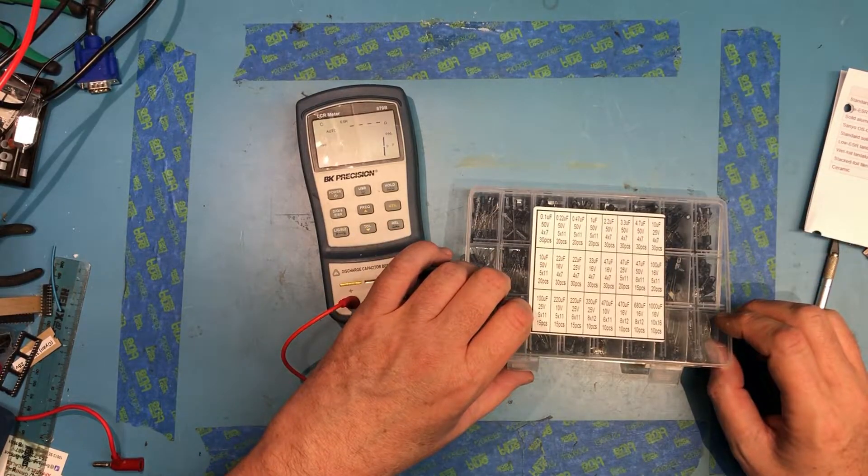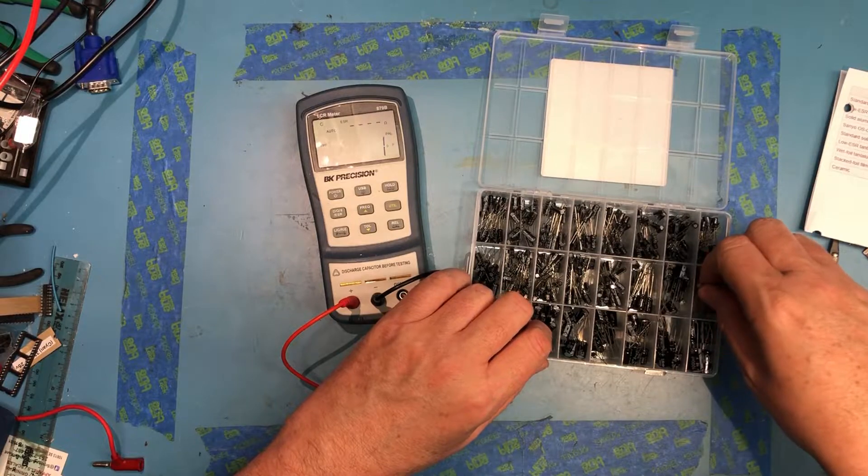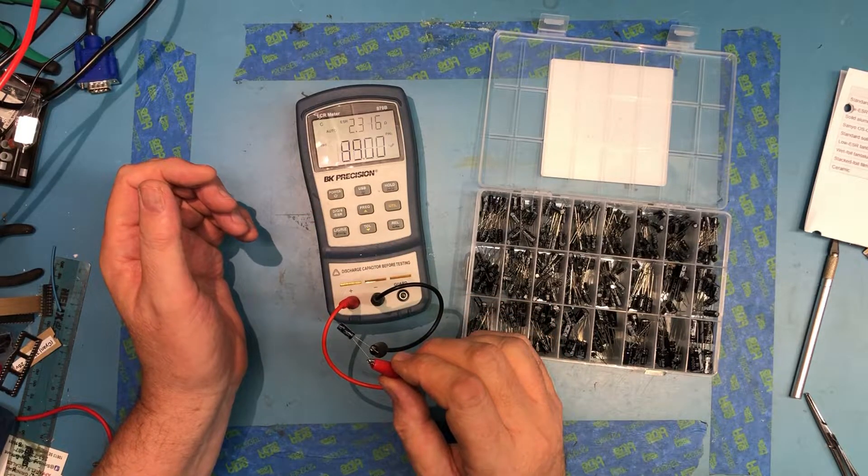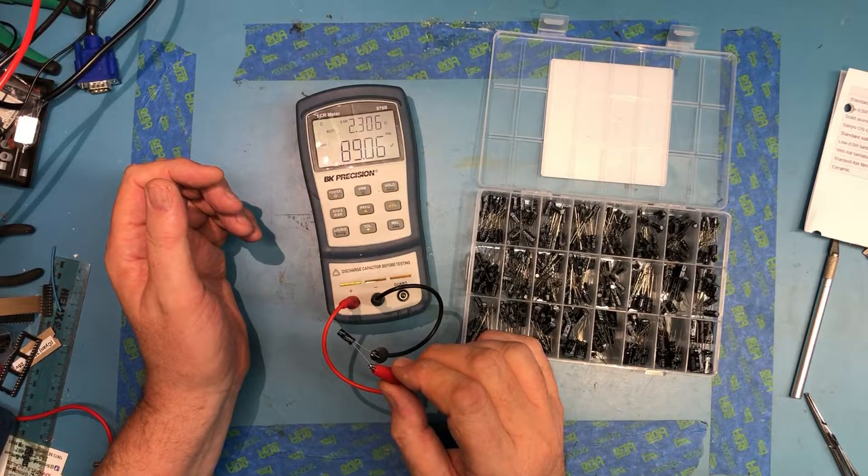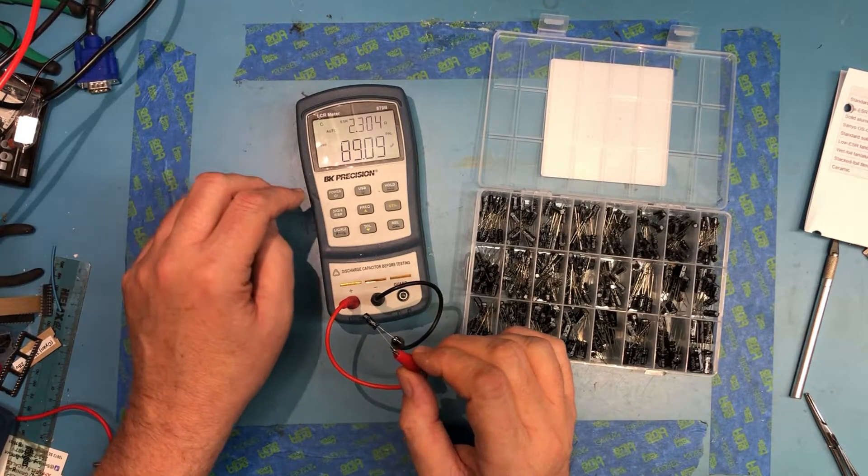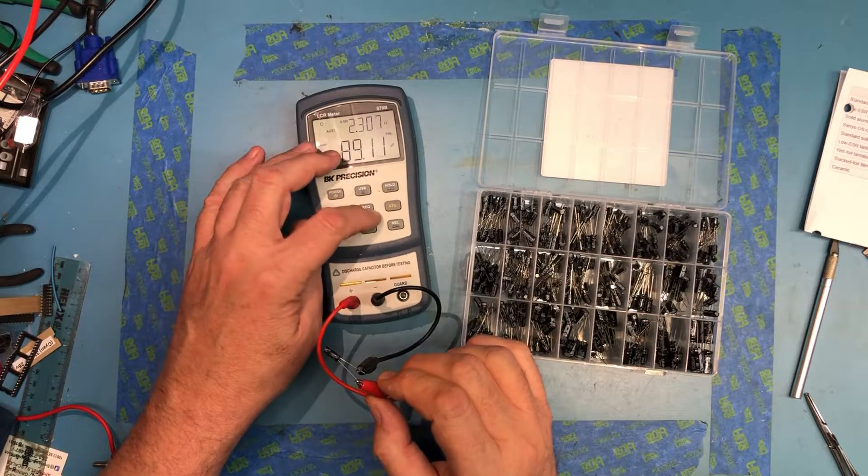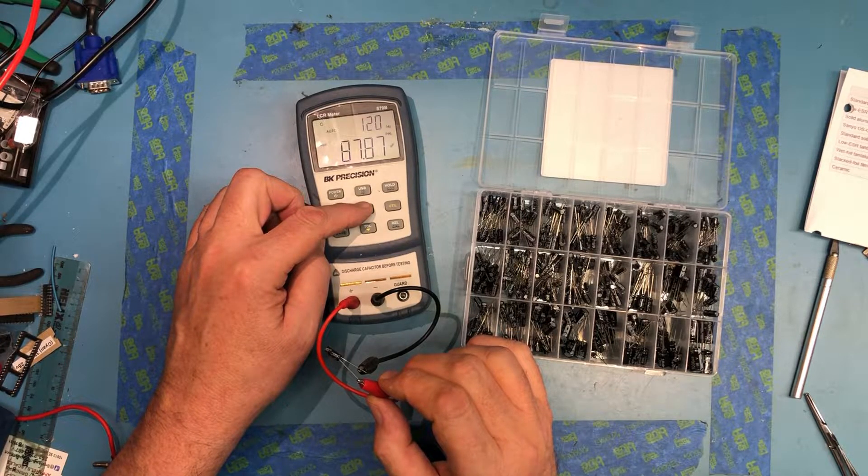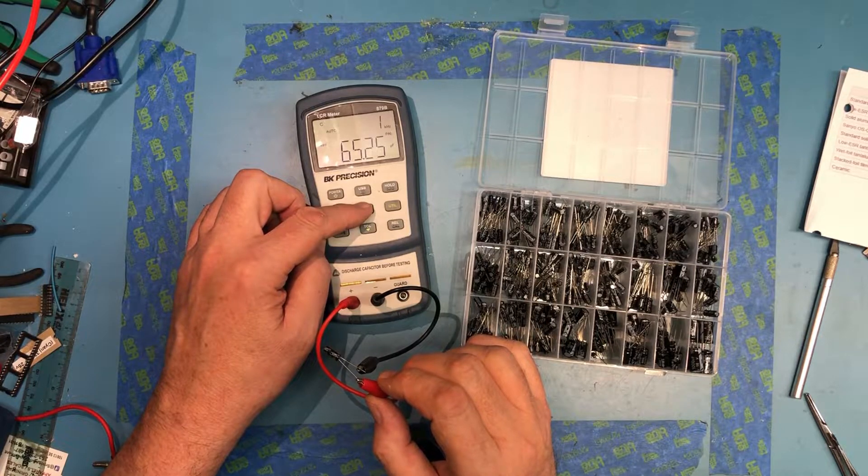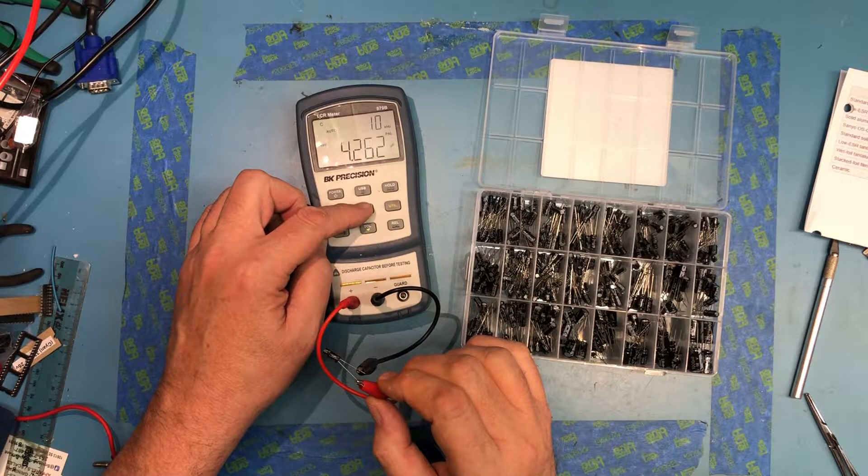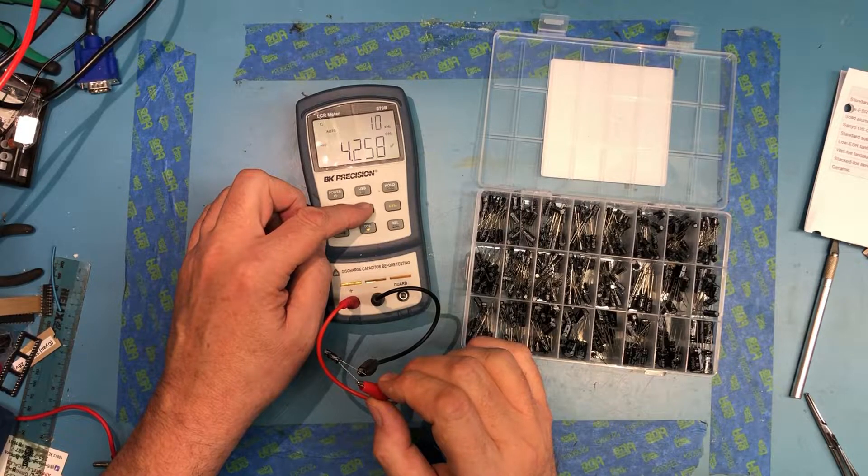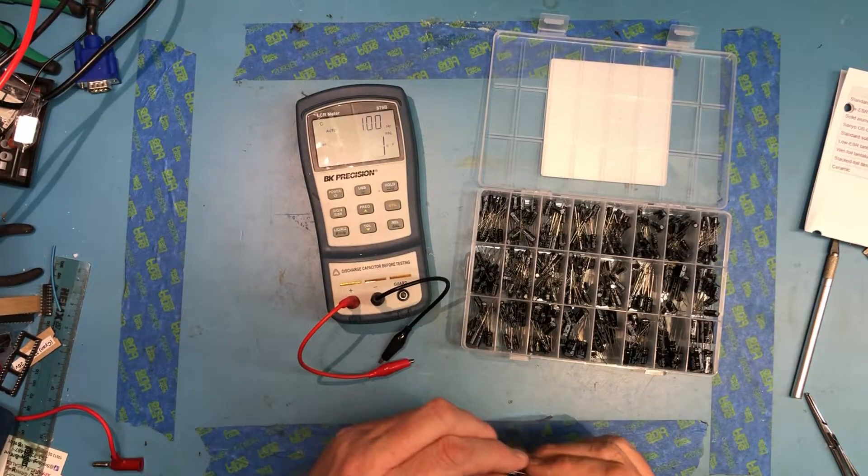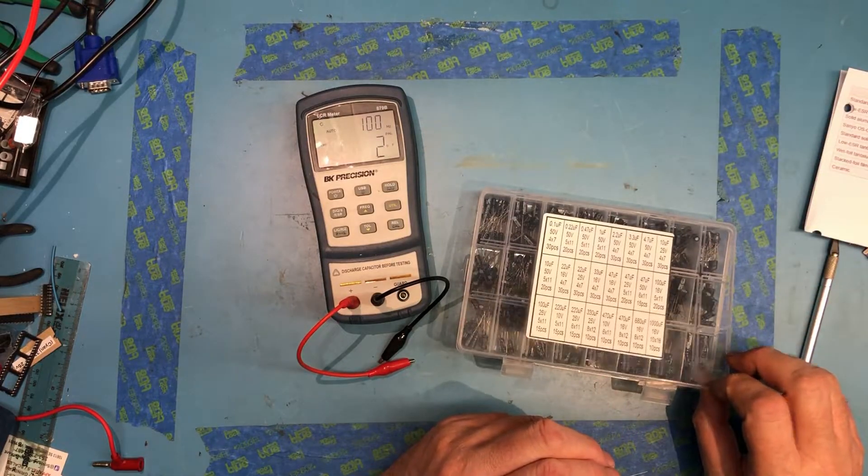So there's some 100 microfarads buried in here, over here on the end. A little bit low, 90 microfarads, 2.3 ohms. Again, that's in a good range. Let's move the frequency around. 100 hertz, 120 hertz, 1 kilohertz, pretty low. 10 kilohertz, 100 kilohertz, or 100 hertz. So, I don't know. This doesn't seem horrible.